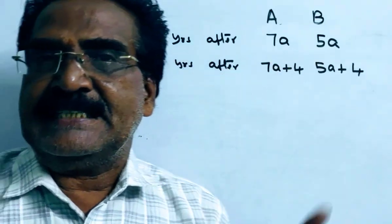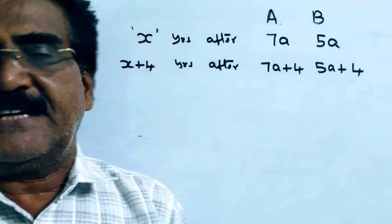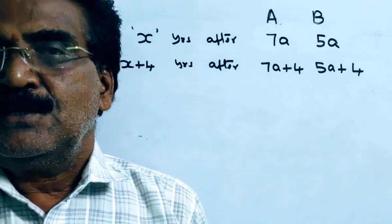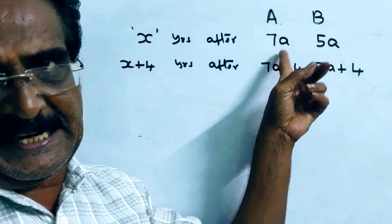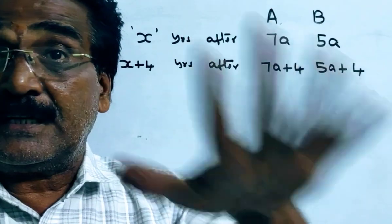After X years, the ratio of the ages of A and B is 7 to 5. So the ages are 7a and 5a after X years.